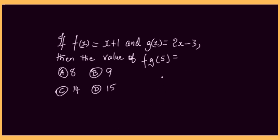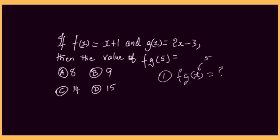Let's look at one particular method we could use, which is to find f of g of x. We'll form an expression for f of g of x, and once we have that, we can replace x with 5 to find f of g of 5.